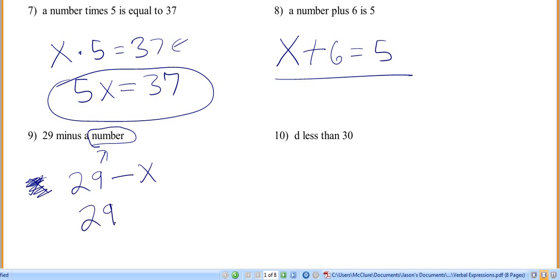You just write this one just like it's written. 29 minus a number. So once again, 29 minus a number, right? So it's important to read, so you don't make a mistake like I just did.